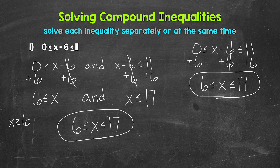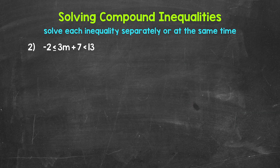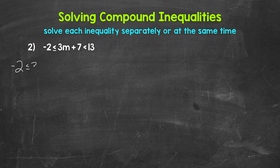Let's move on to number 2. We're going to solve this one the same way — each inequality separately, then at the same time. We have 3m plus 7 is greater than or equal to negative 2 and less than 13. Let's start by separating this into the two inequalities: negative 2 is less than or equal to 3m plus 7, and 3m plus 7 is less than 13.